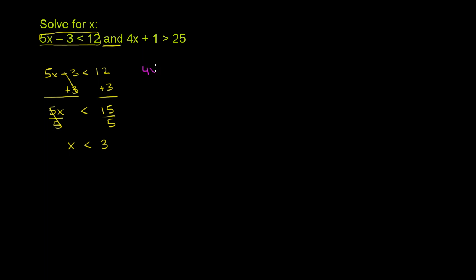We have 4x plus 1 is greater than 25. Very similarly, we can subtract 1 from both sides to get rid of that 1 on the left-hand side. And we get 4x, the 1's cancel out, is greater than 25 minus 1 is 24.